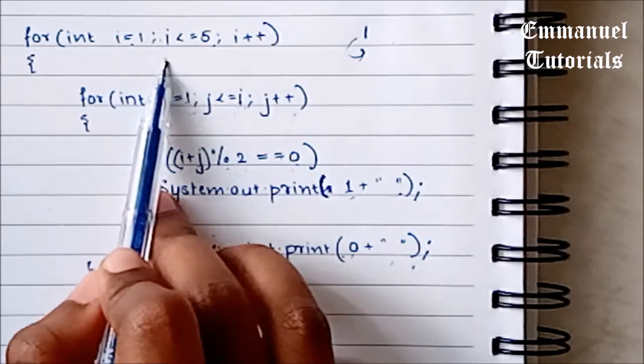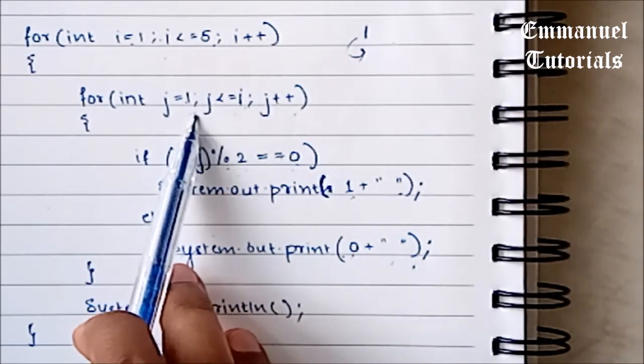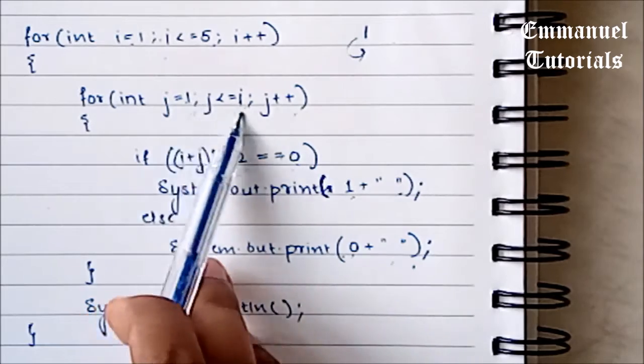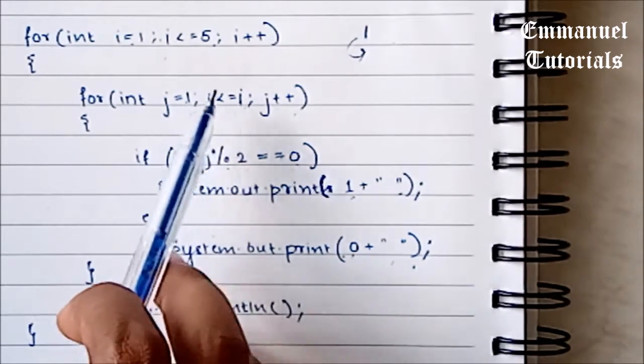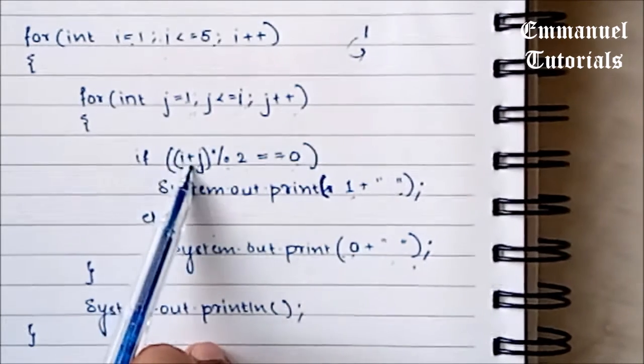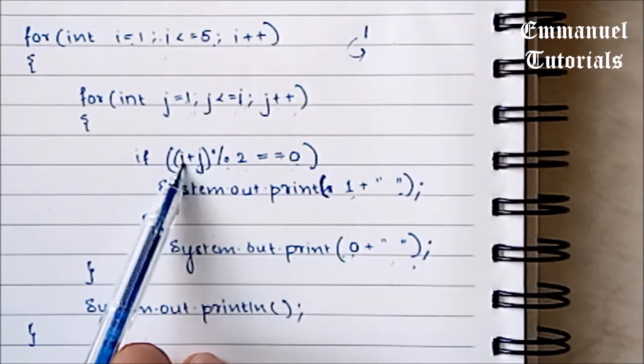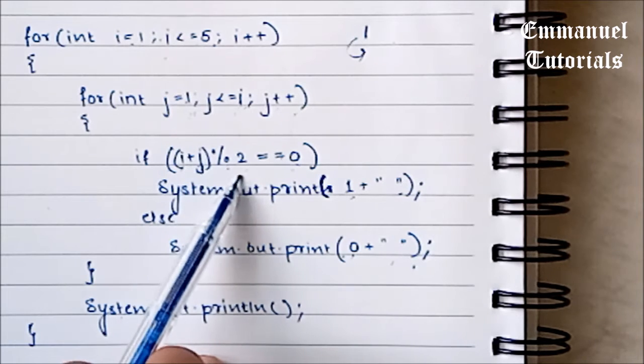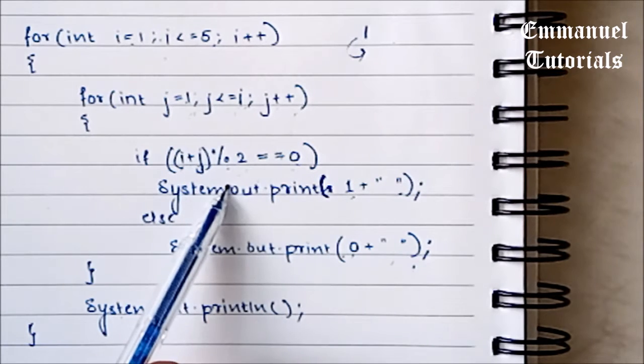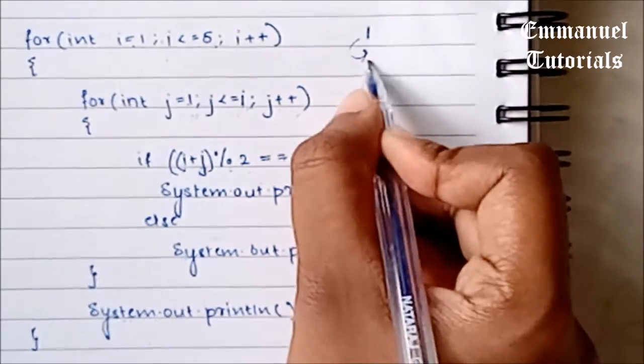Now in the outer loop, the value of i becomes 2. It comes back to the inner loop. J starts from 1. J is initialized to 1, so j is 1 now. It comes inside the inner loop. I plus j. I was 2, j is 1. 2 plus 1 is 3, 3 modulus 2 is 1. If condition is false, it comes to the else part. It prints 0 and it prints a space.